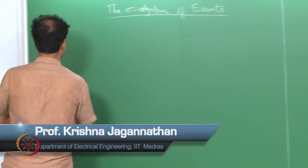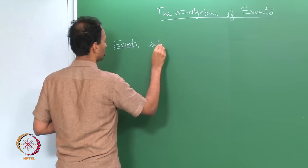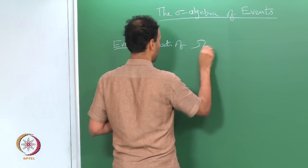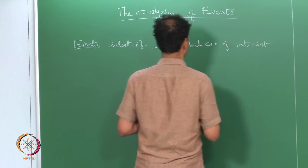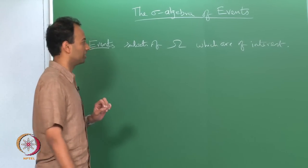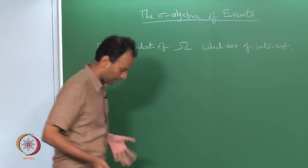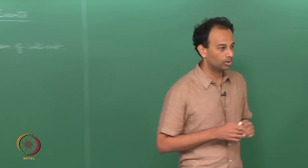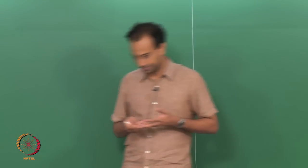Welcome back. We were discussing events, which we defined as subsets of omega which are of interest. This is a very loose and informal definition — plain English for now. We have been trying to formalize what we actually mean by events. We have this sample space omega which contains all possible elementary outcomes of a random experiment, and we are looking at subsets. All events are subsets of omega, but not all subsets of omega are necessarily considered events.